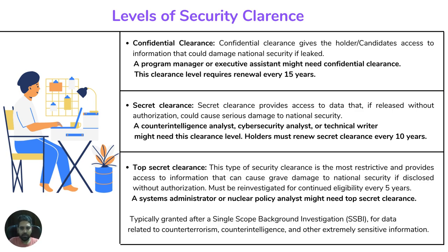Top Secret clearance is the most restrictive and provides access to information that could cause grave damage to national security if disclosed. Highly sensitive information is protected by Top Secret clearance and it must be reinvestigated for continuous eligibility every five years. Nuclear policy analysts, system administrators, and senior system admins are examples — though it depends on client and project requirements.